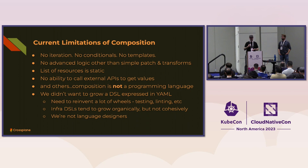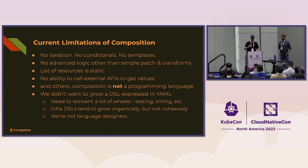We didn't want to grow a new DSL for configuring Crossplane when we first came up with Composition. At the same time, different platform engineers have different preferences — some want Helm templates, some want CUE, some might want Python. So we thought: why not meet people where they're at and let them use the tools they already know? If you saw this session last year, we were just about to ship this in alpha. Now, as Jared mentioned, it hit beta last week.